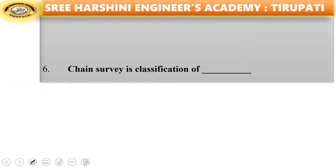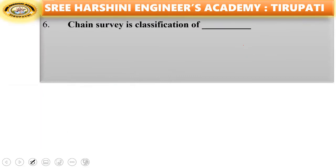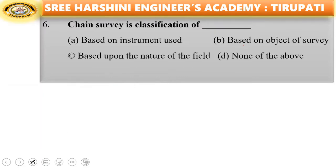Sixth question: chain survey is a classification based on — instrument used, object of survey, nature of the field, none of these. The answer is based on instrument used.